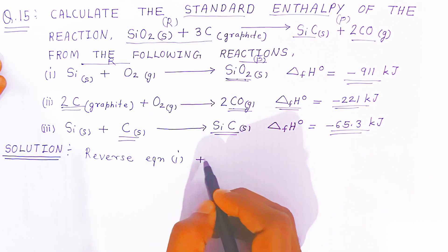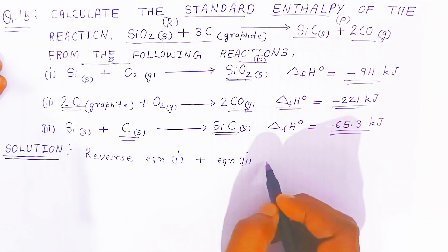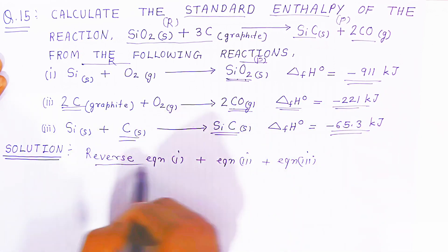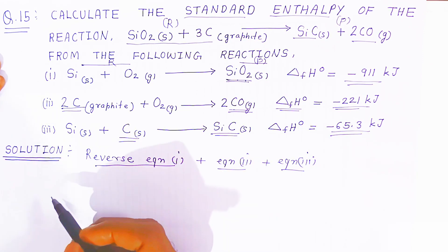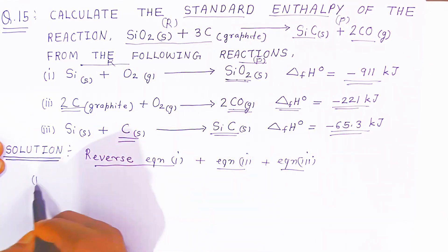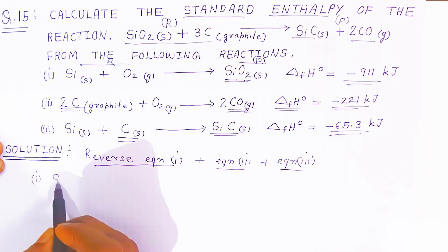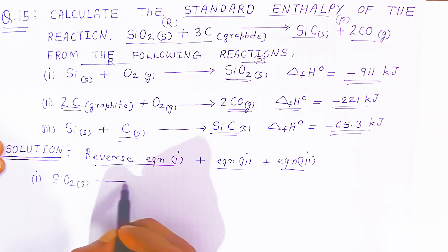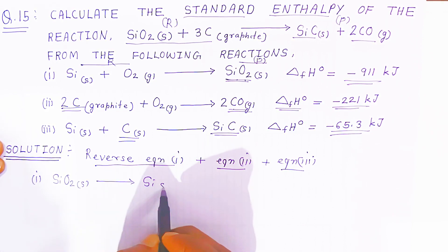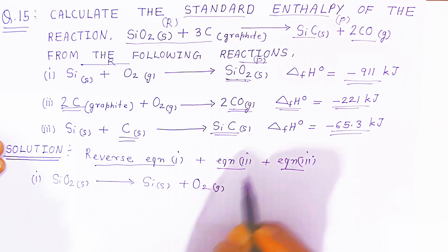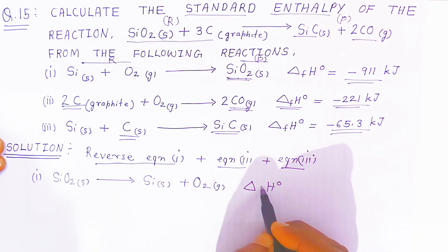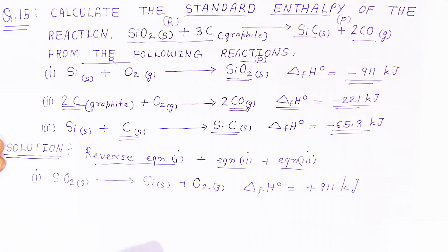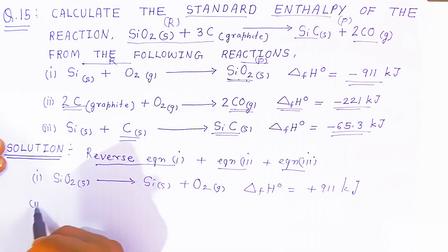You have to reverse equation number one and simply add equations two and three. When you reverse equation number one, silicon oxide comes to the reactant side, and silicon solid plus oxygen gas goes to the product side. The standard enthalpy of formation becomes plus 911 kJ.